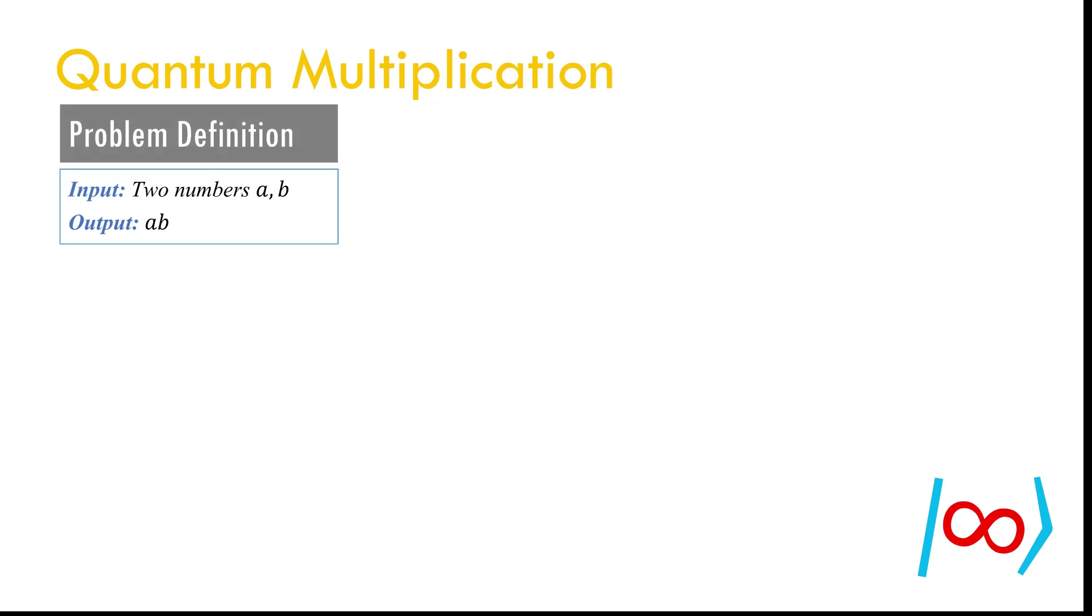Suppose we want to multiply two n bit numbers a and b. We start with the binary expansion of a. Using distributivity, we can express multiplication as summation of n terms. We proceed by maintaining a partial sum. Then we add next terms one by one as follows. Finally, the partial sum equals the desired product.